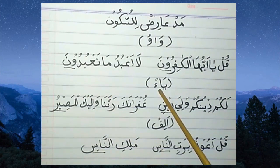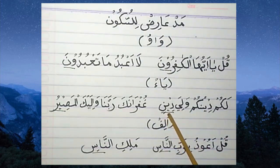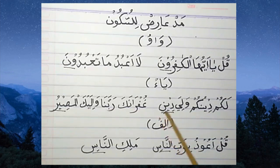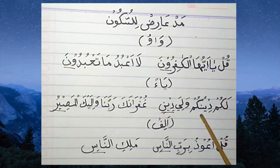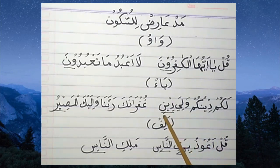Contoh mad thobi'i ya: Lakum dinukum waliyadin. Perhatikan di sini ada mad thobi'i ya, terus posisi mad thobi'i ya tersebut ada di sebelum huruf terakhir. Nah ini hukumnya adalah mad arid lissukun. Cara membacanya bisa tiga macam: dua harakat 'waliyadin', empat harakat 'waliyadin', dan enam harakat 'waliyadin'.